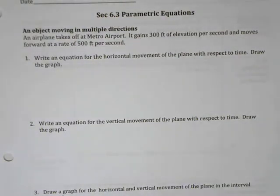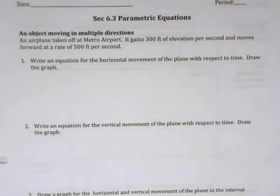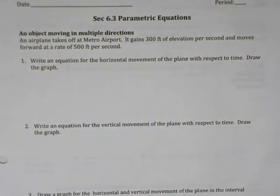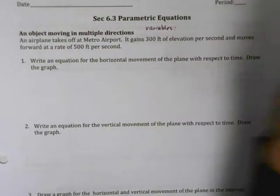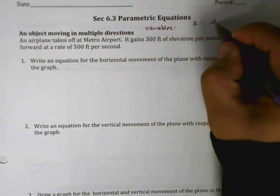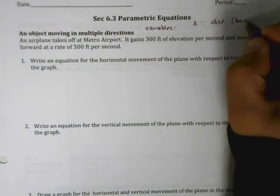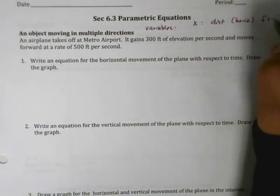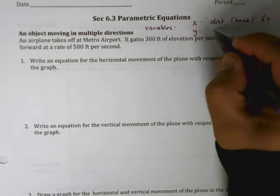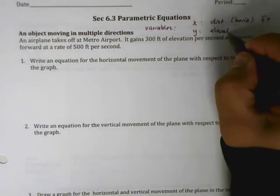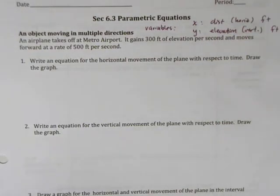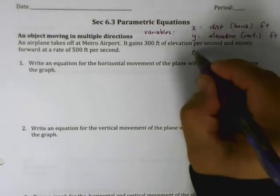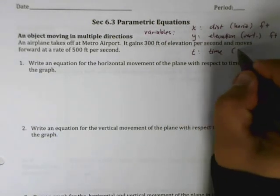Before getting into the first problem, let's define a couple of variables. x is the distance — horizontal distance — measured in feet. y is the elevation — vertical distance — also measured in feet. And t is time, measured in seconds.